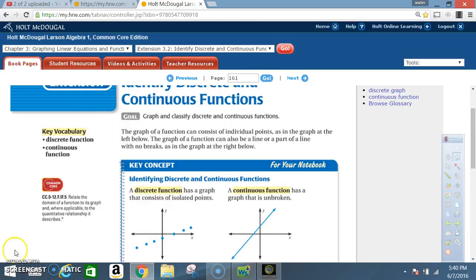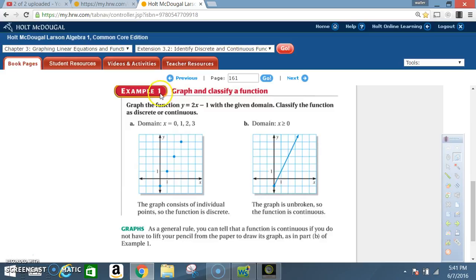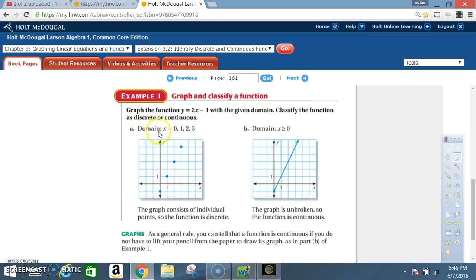Example 1: Graph and classify a function. Graph the function y equals 2x minus 1 with the given domain. Classify the function as discrete or continuous. Part a: domain x equals 0, 1, 2, and 3. Notice that each point is individual.